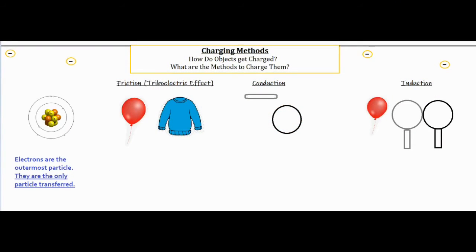In this video I'm going to be talking about charging methods, how do objects get charged and what are the methods to charge them. So there are three main charging methods that you see on the screen which are friction, otherwise known as the triboelectric effect, conduction, and induction.